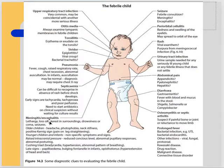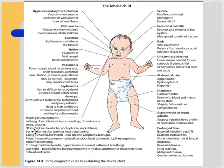Meningitis and encephalitis have been covered before. Importantly, infants don't give typical signs like Kernig's or Brudzinski's sign positive. Instead they have a weak presentation: lethargy, loss of interest in surroundings, drowsiness, coma, or seizures. Older children give the typical findings of neck stiffness and Kernig's sign. Infants have non-specific symptoms and signs.